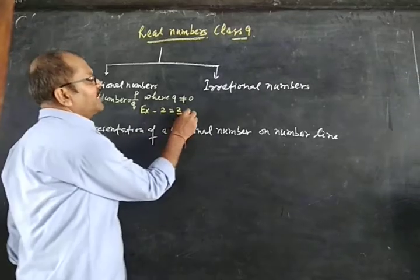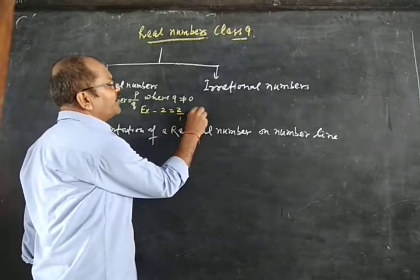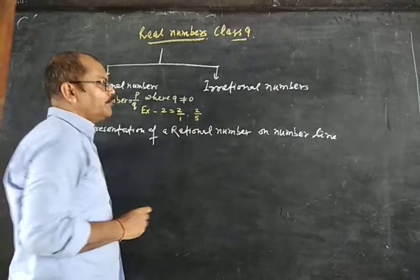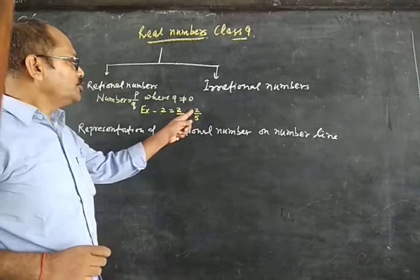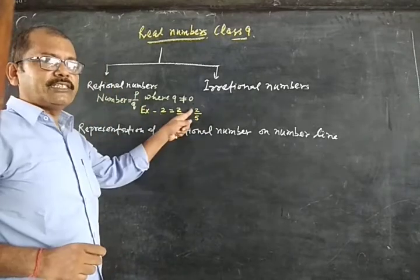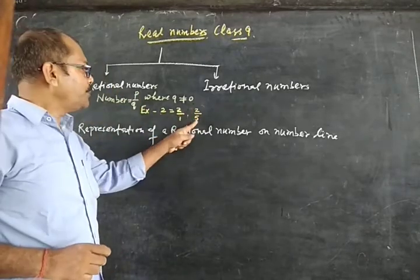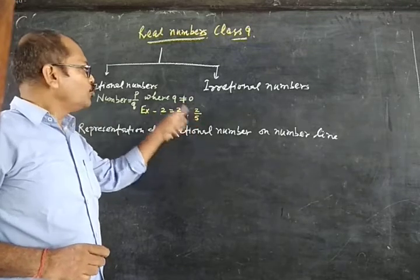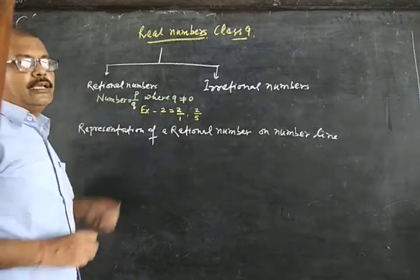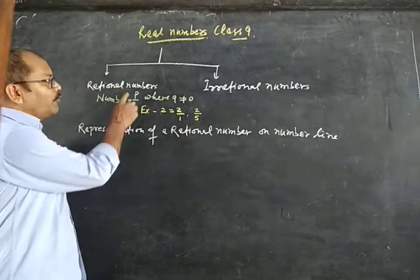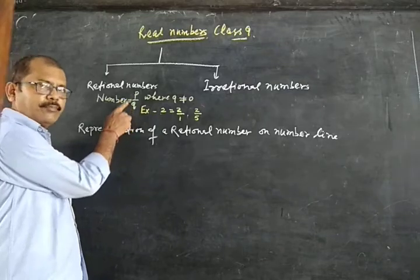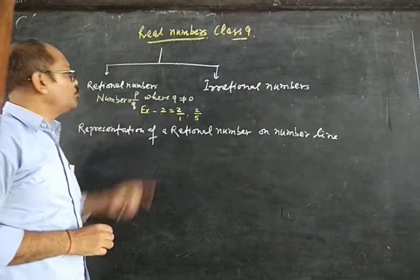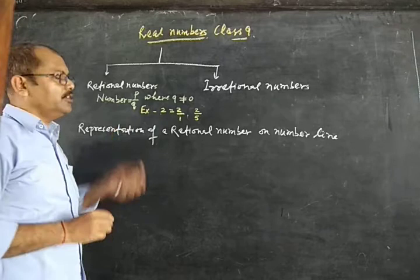Similarly, consider another example: suppose 5. That is also a rational number, because it can be written as 5/1 — in the form of p/q. So if a number can be written in the form of p/q, whatever the number may be, then such a number is said to be a rational number.